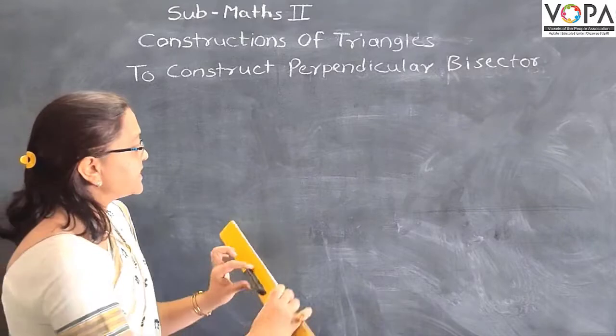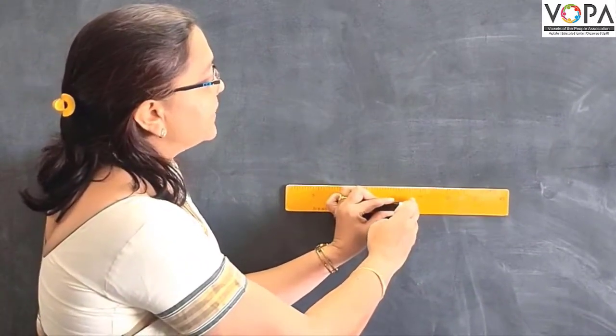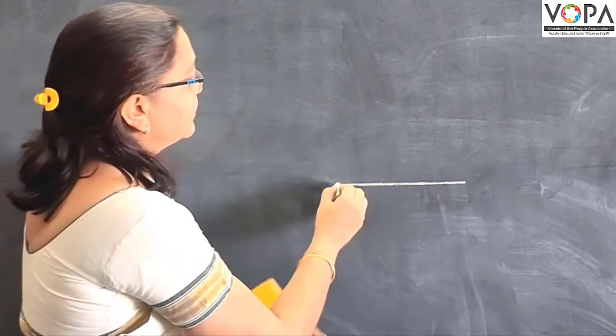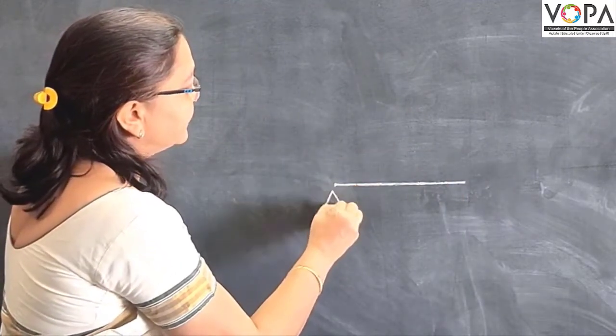To draw perpendicular bisector, draw any segment. Suppose this is segment AB.